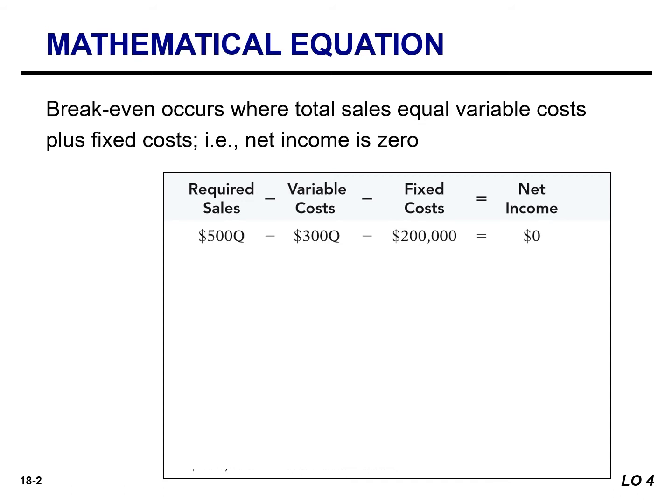The first line shows a common equation used for CVP analysis. When net income is set to zero, this equation can be used to calculate the break-even point. Break-even occurs when total sales equals variable cost plus fixed cost — in essence, net income is zero. Let's rewrite this equation with the contribution margin, sales minus variable cost, on the left side and fixed cost and net income on the right side.